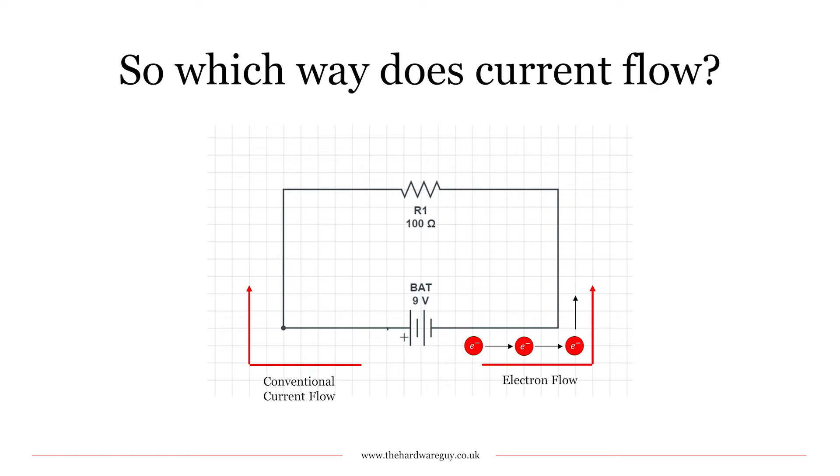Based on what we've just learned, we now know that electrons are negatively charged and they therefore flow from negative to positive. You may also have heard of conventional current flow. Conventional current flow is an assumption that positive charge carriers cause current to flow. This assumption was made by Benjamin Franklin in the 1700s. This means that current flows in the opposite direction to electrons.